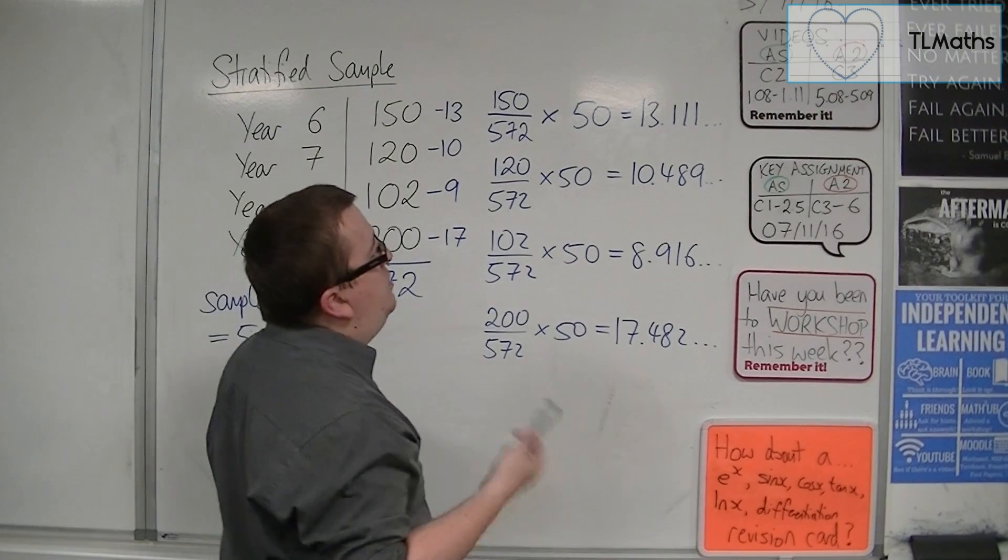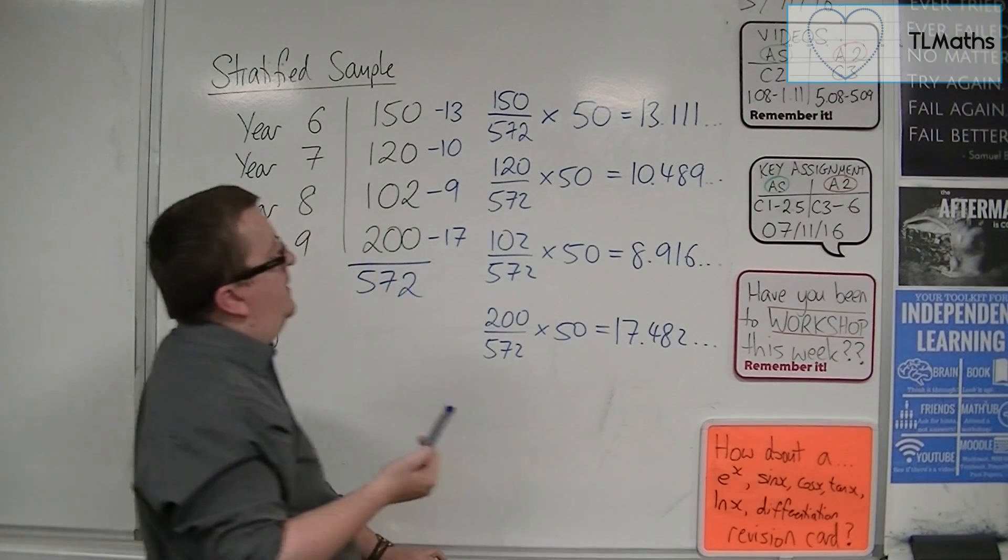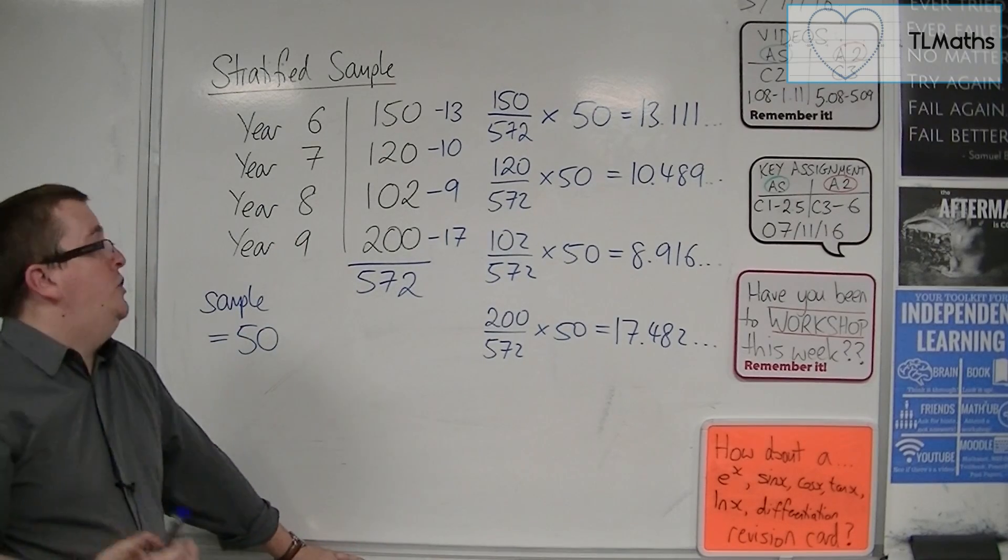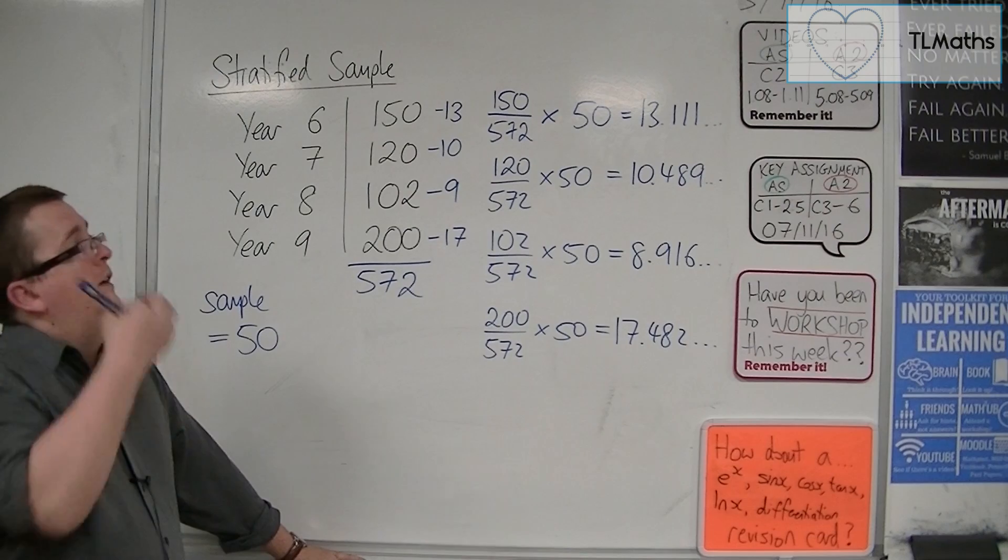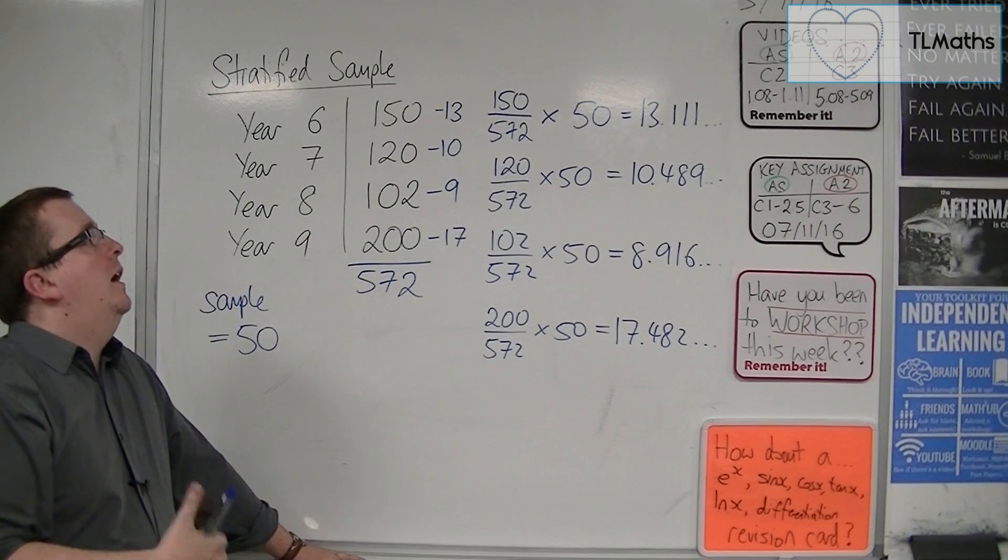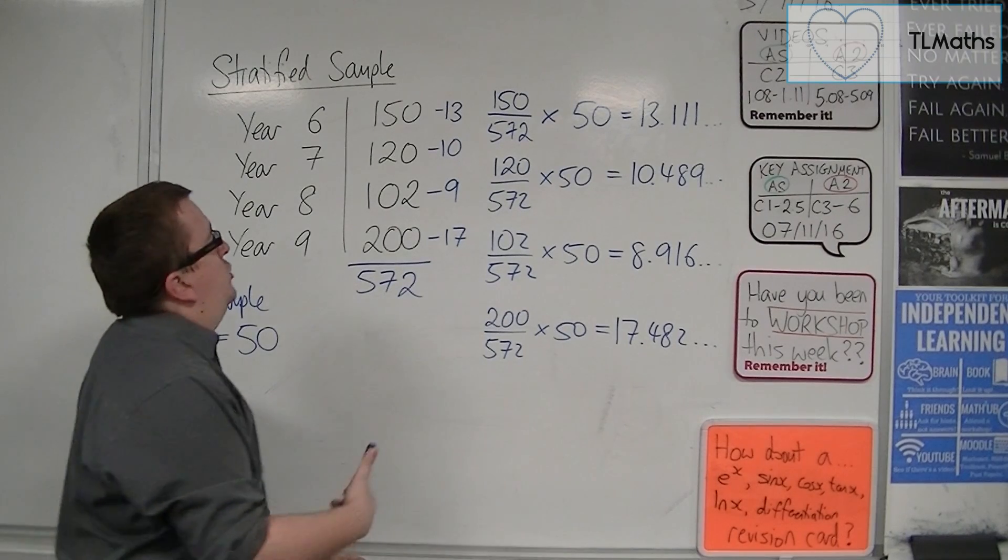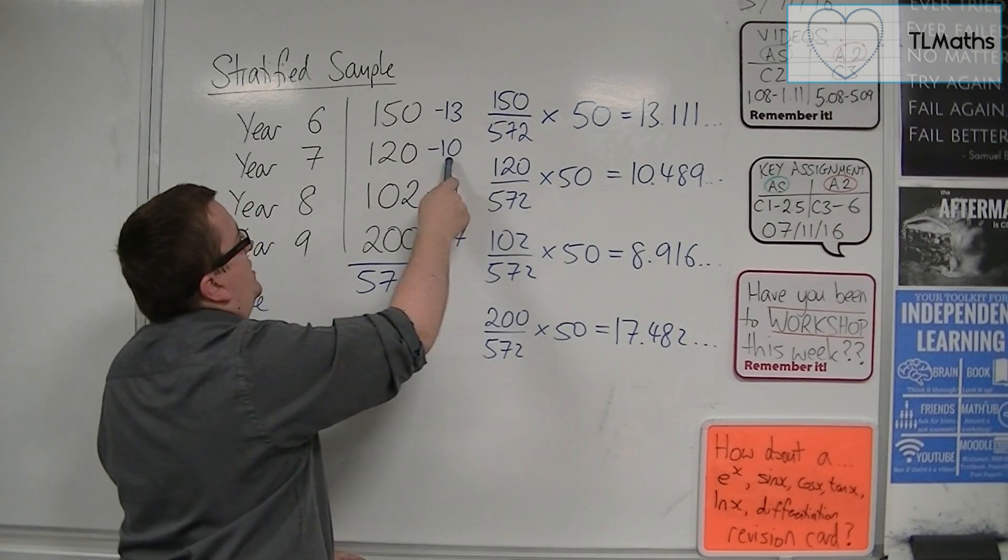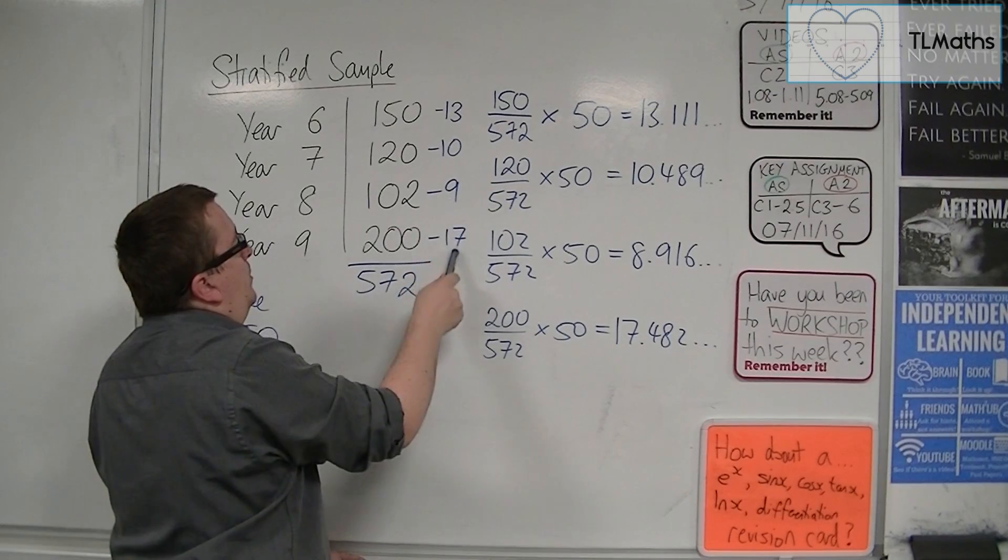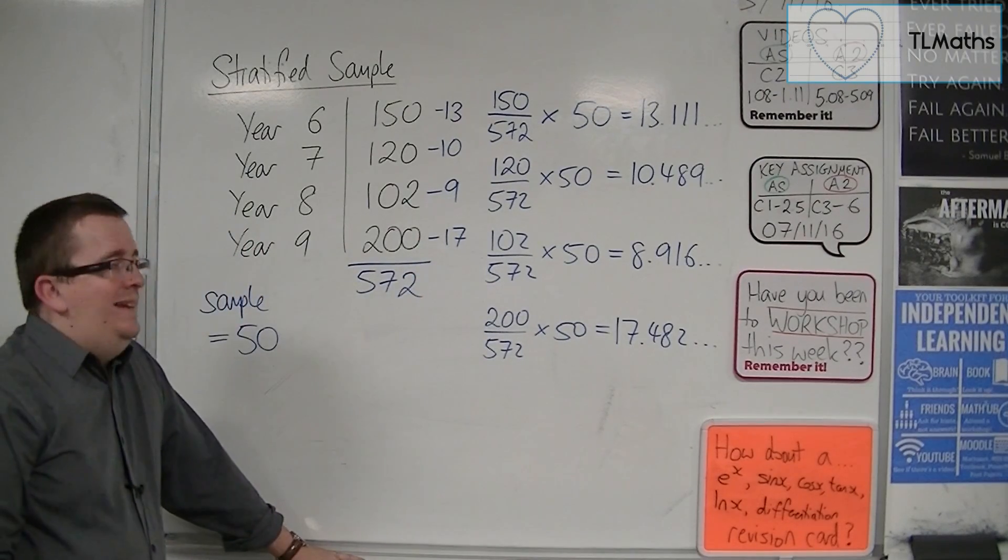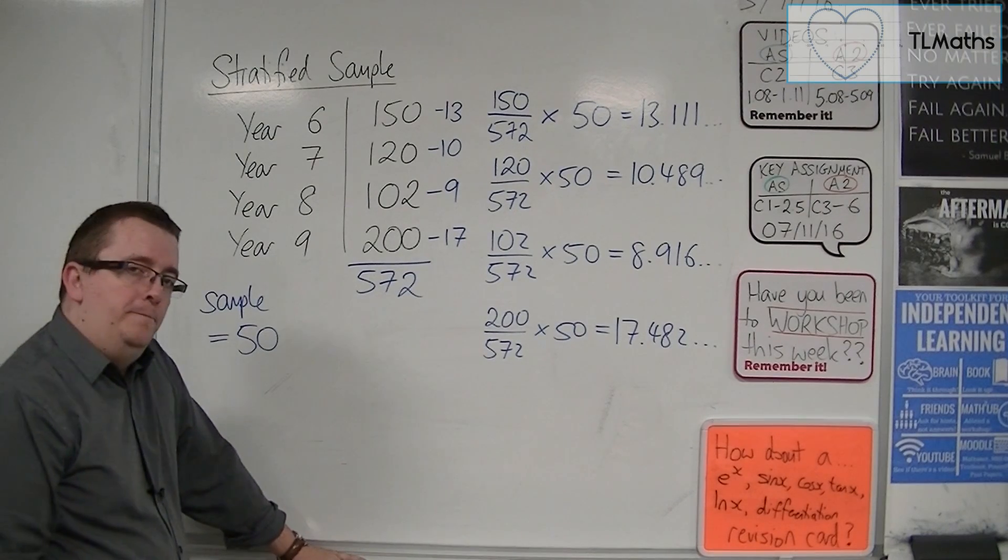Now, one thing you might notice from this, is that now I have a fair share from each of the cohorts. So I should get a representative sample. The thing is that actually 13 plus 10 plus 9 plus 17 doesn't actually add up to 50. It actually adds up to 49.